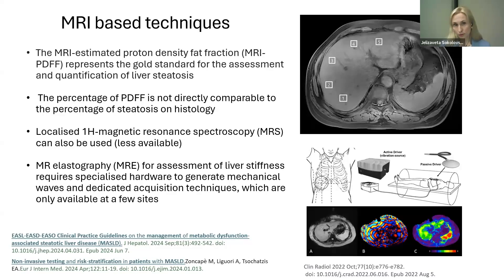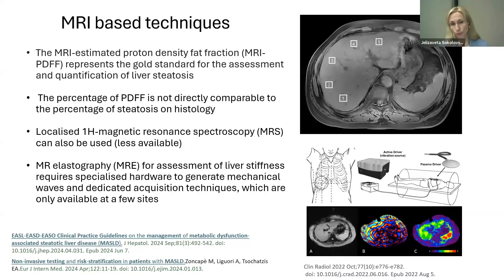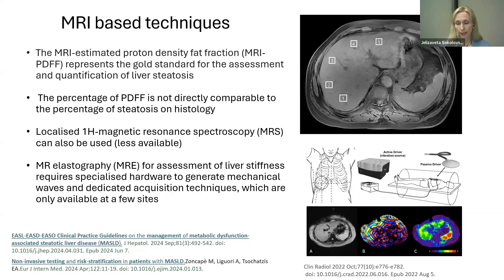MRI-based techniques can also be used, though not for wide screening due to cost. MRI-estimated proton density fat fraction is considered the gold standard for assessment and quantification of liver steatosis. Note that fat percentages from imaging cannot be directly compared to histological steatosis percentages since histology quantifies cells. Magnetic resonance spectroscopy and MRI elastography can also be used but are available at only a few sites.